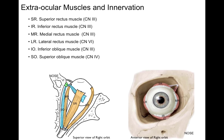Now that we have those movements, let's look at the extraocular muscles and their innervation. On the left-hand column, we have the abbreviations for superior rectus, inferior rectus, medial rectus, and lateral rectus — four straight muscles — and inferior oblique.